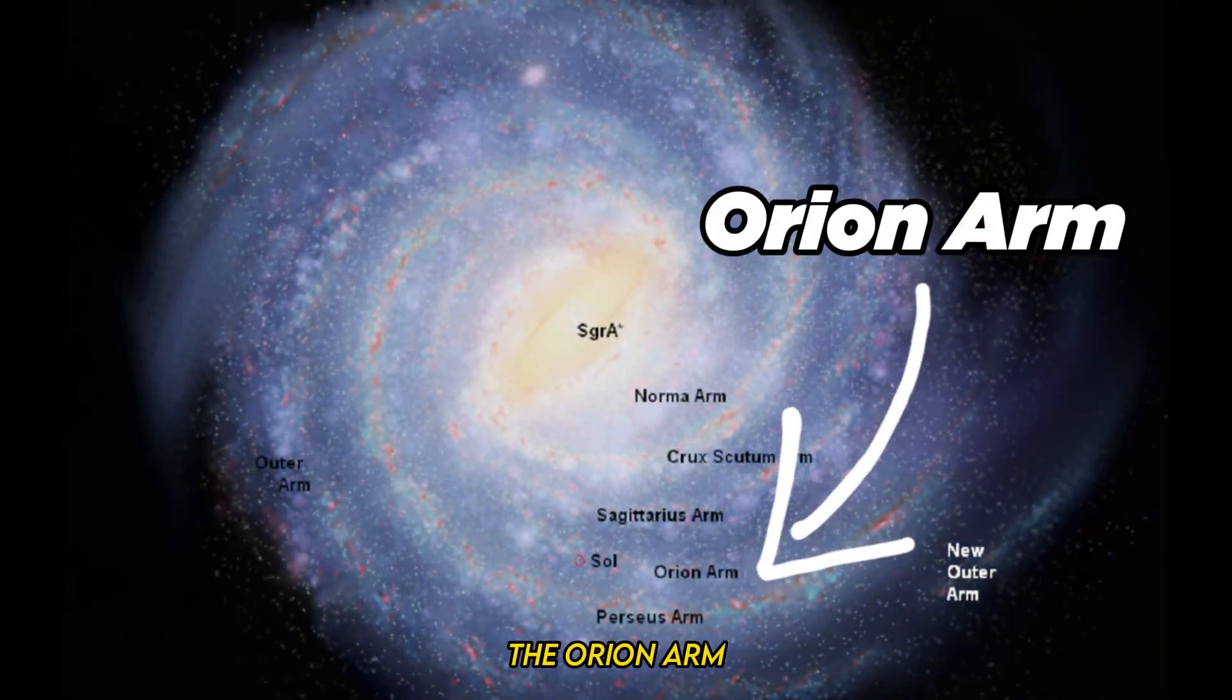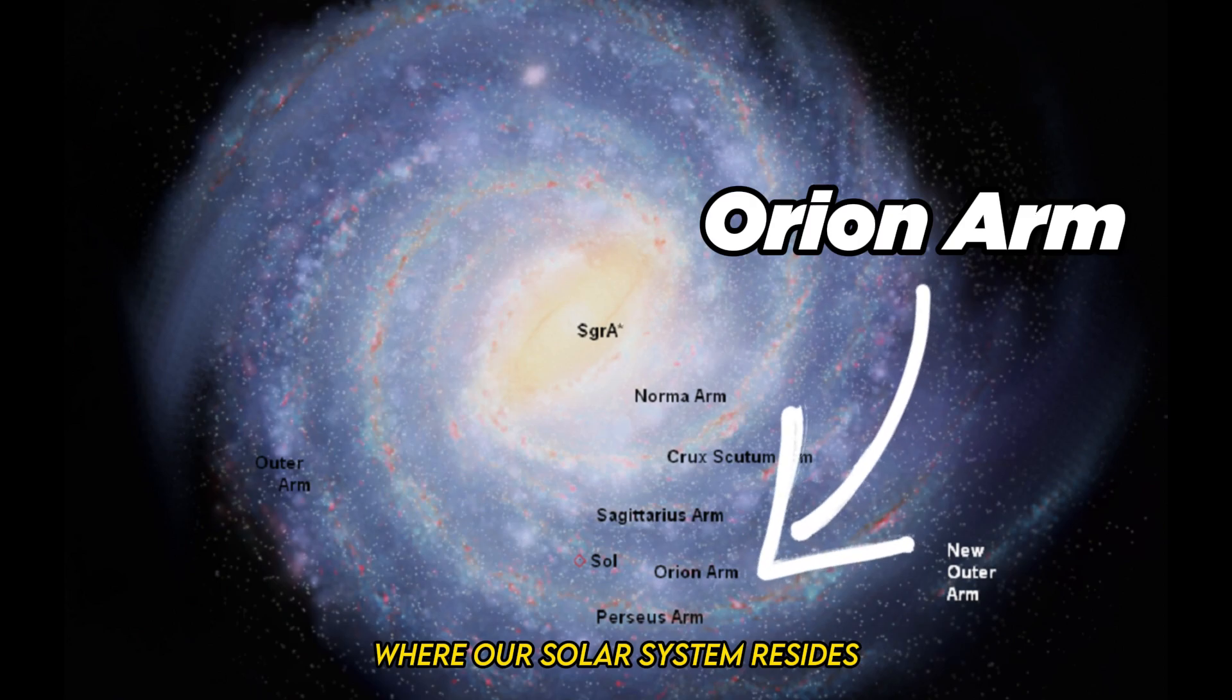The Orion Arm, where our solar system resides, is just one segment of this celestial highway.